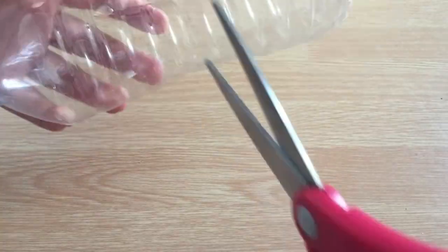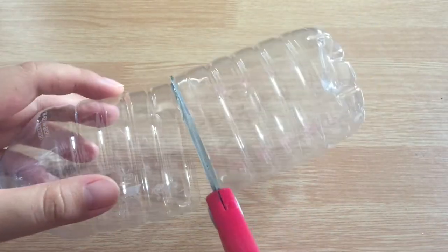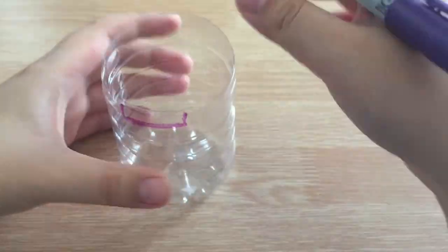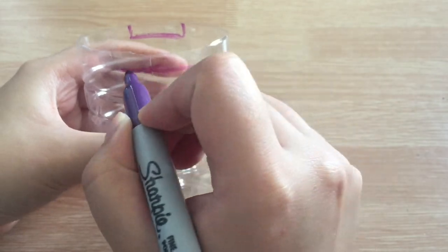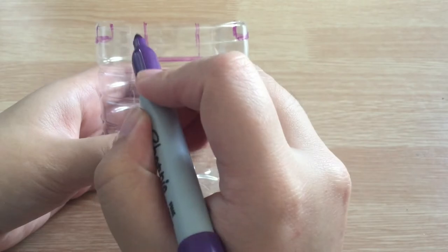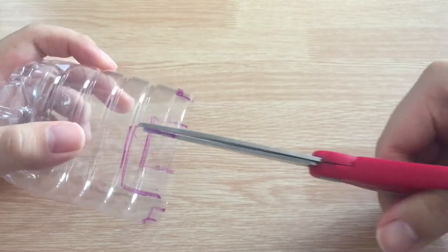To begin, cut the water bottle in half. We will be using the bottom half. Mark two notches opposite each other somewhere near the top of the bottle. Then mark two opposite notches in between the first two notches and lower on the bottle. Cut out these notches.